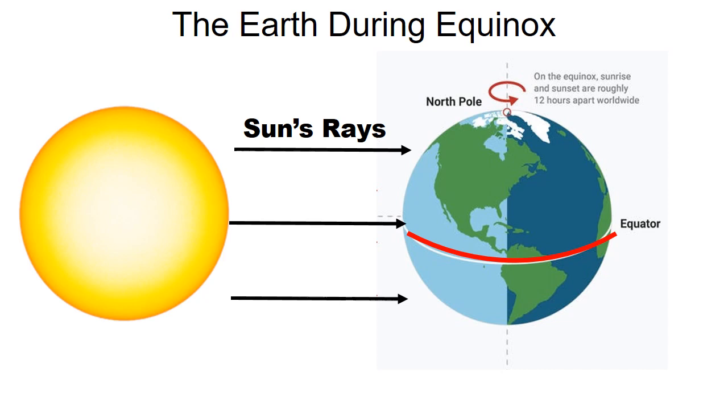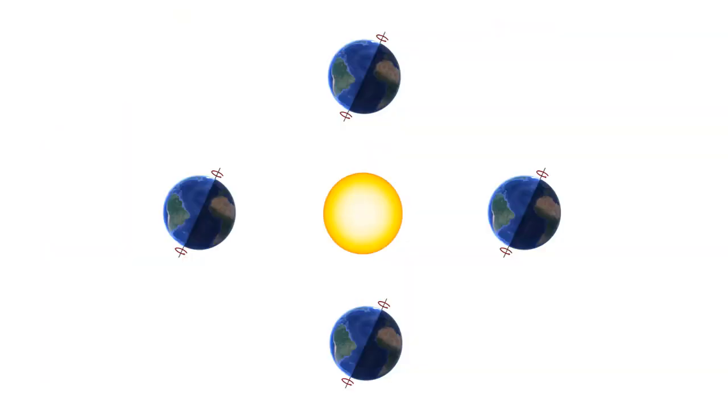During an equinox, the Earth's axis, which is tilted at 23.5 degrees, is not tilting toward or away from the sun.